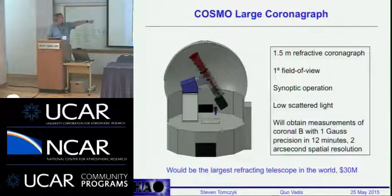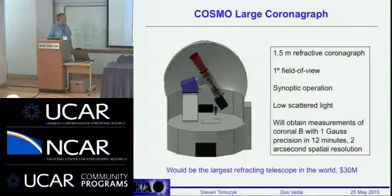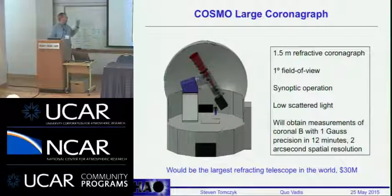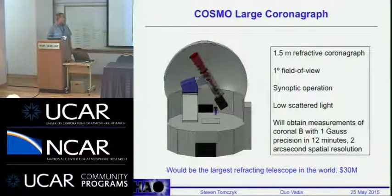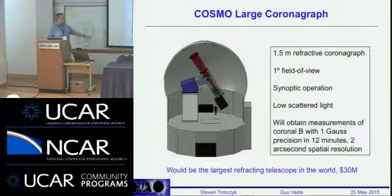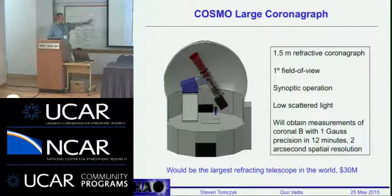The engineering model of the 1.5-meter refractive coronagraph has a large one-degree field of view. It's synoptic — dedicated to observing the corona every day — with low scattered light. We believe we'll be able to obtain measurements of the coronal magnetic field with one gauss precision in 15 minutes and two arc-second spatial resolution. Cost is around $30 million including contingency.